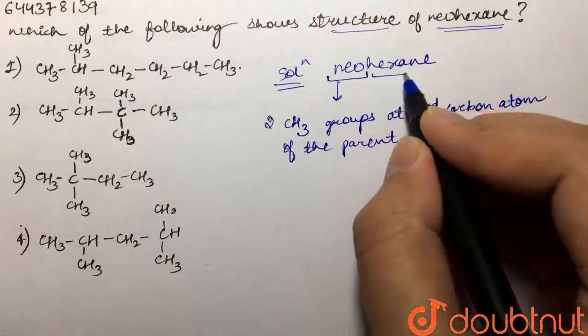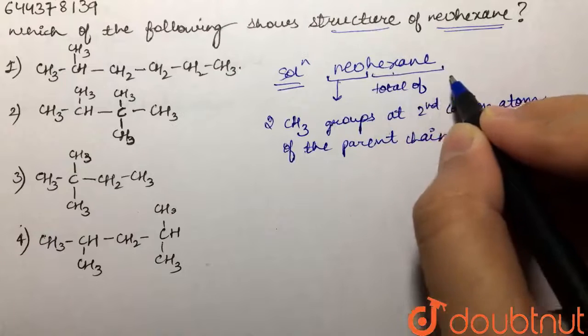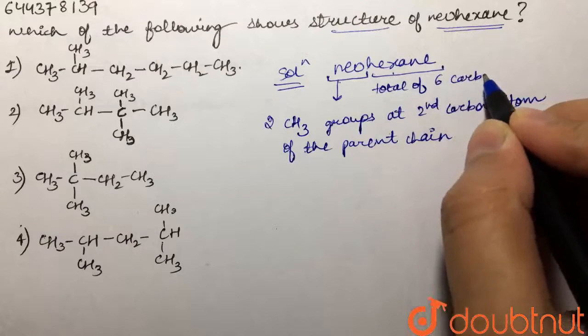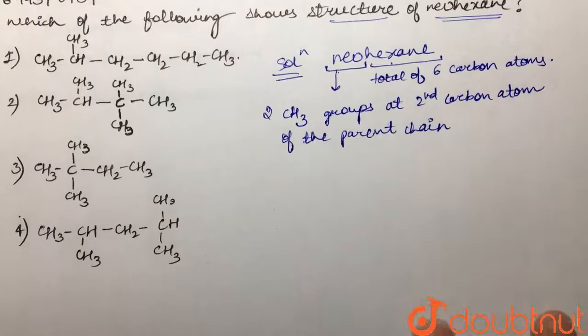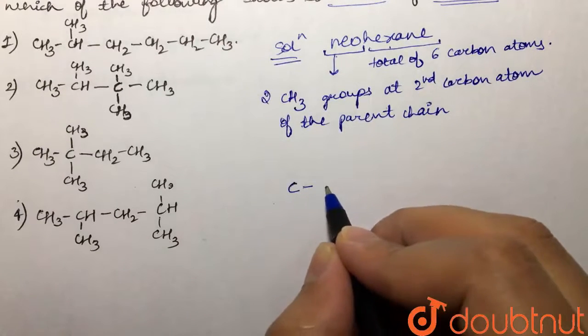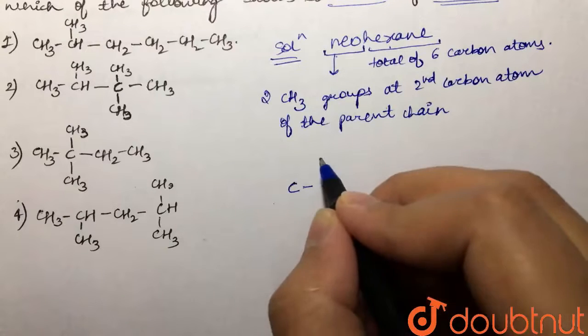And hexane means that we have a total of six carbon atoms. So if we draw the structure, suppose this is our first carbon, this is our second carbon, so at the second carbon we're gonna have two methyl groups.